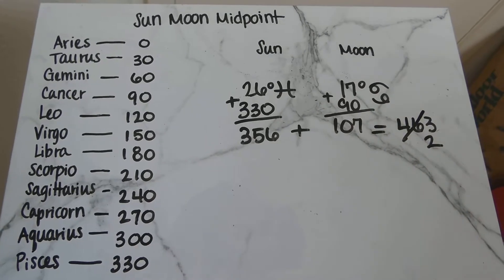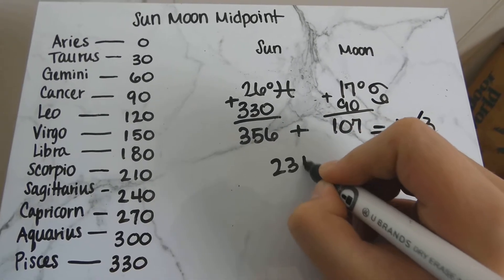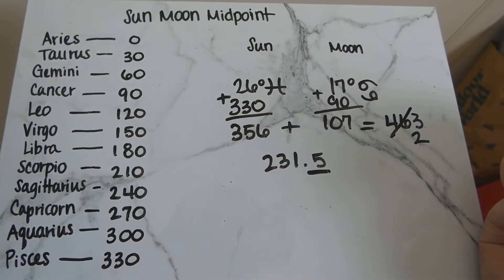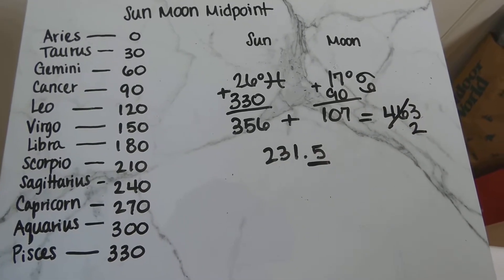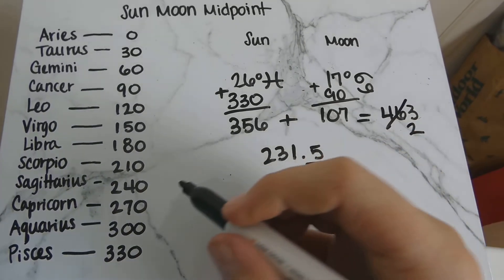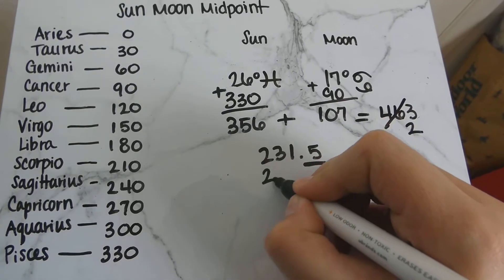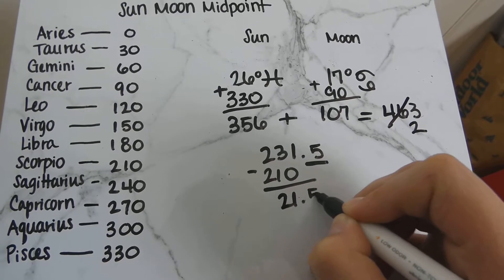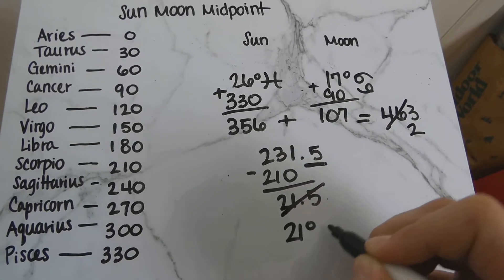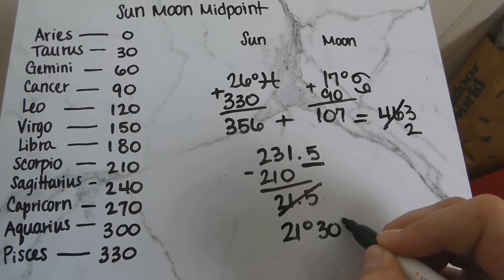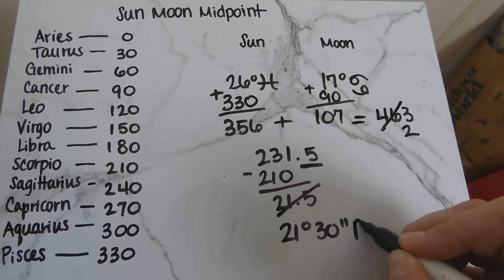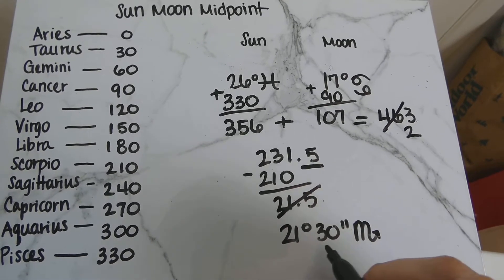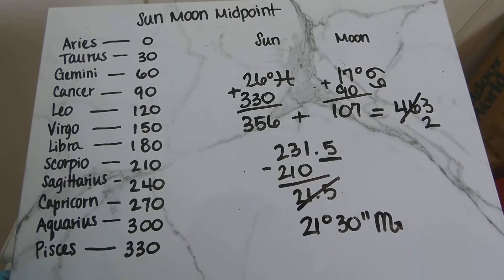Divide that by 2 and we're going to get 231.5. Now we don't have the point five in degrees — what's closest to 231 on here would be Scorpio at 210. So minus 210 gives us 21.5, or 21 degrees and 30 minutes in Scorpio. Minutes go up to 60 also, so that's where the half went.